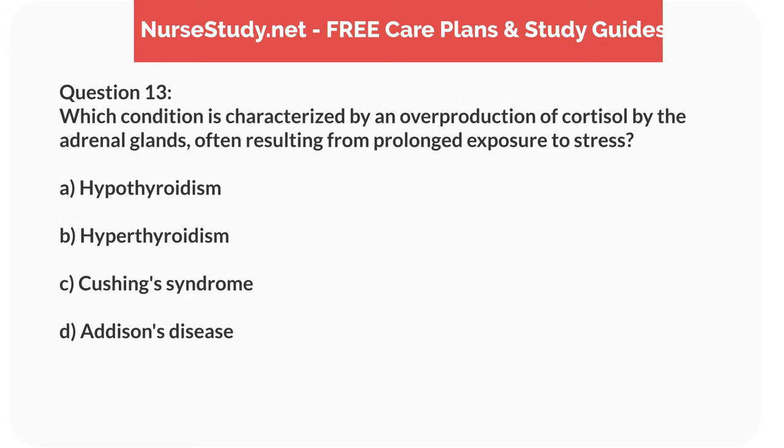Question 13. Which condition is characterized by an overproduction of cortisol by the adrenal glands, often resulting from prolonged exposure to stress? A. Hypothyroidism. B. Hyperthyroidism. C. Cushing's syndrome. D. Addison's disease.